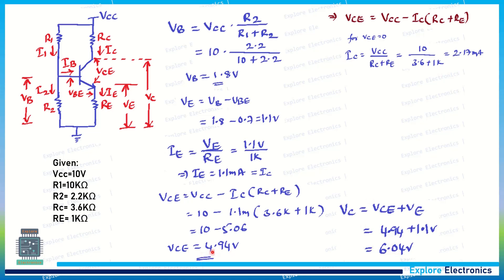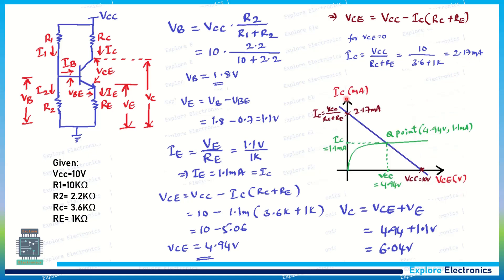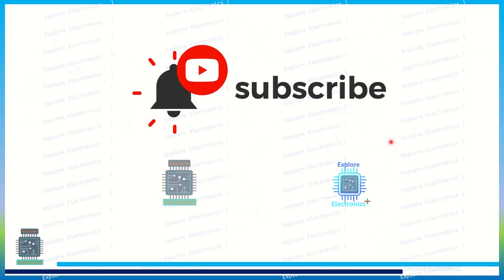Now using these values we can plot the operating point. On the y-axis take IC in milliamps, and on the x-axis take VCE. The maximum VCE is VCC equal to 10 V, and the maximum IC is 2.17 mA. The operating point Q has coordinates VCE = 4.94 V and IC = 1.1 mA. This is how we solve a problem on voltage divider biasing to get the operating point. The same method can be used for any biasing configuration. Thank you.